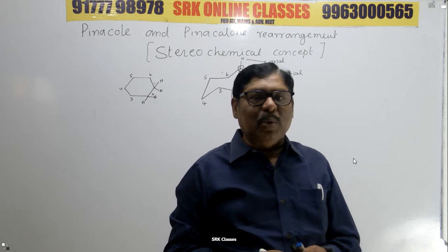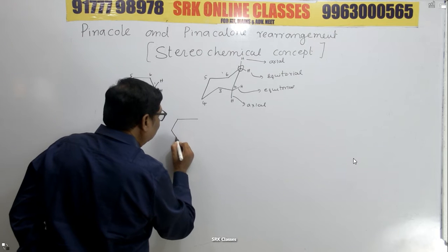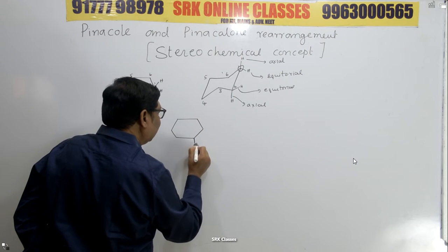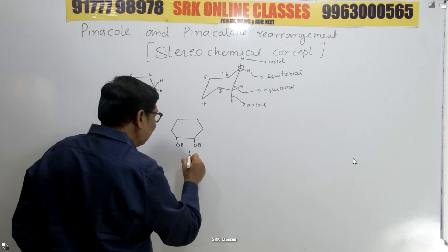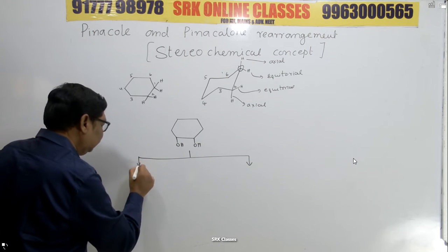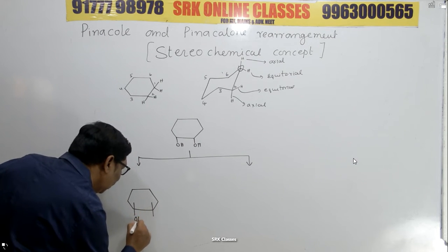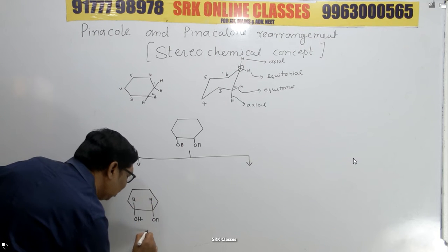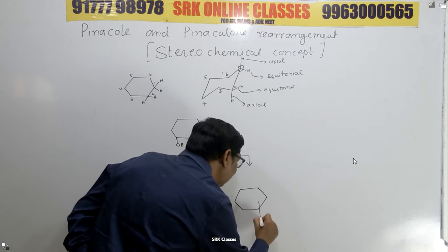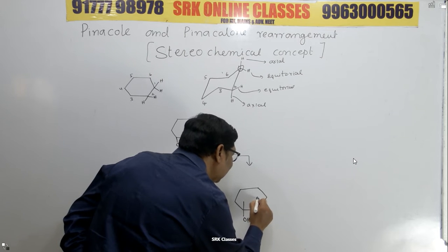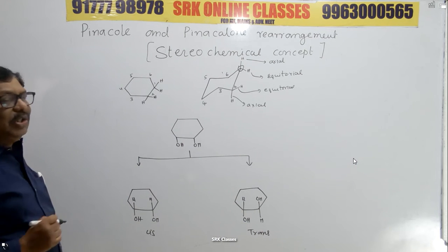I am taking a disubstituted cyclohexane — specifically 1,2-diol substitution. One,two-diol can exist as two geometrical isomers. In one geometrical isomer, two OH groups are on the same side — this is said to be cis. In the second one, two OH groups are in opposite directions — this is said to be trans. These two are called geometrical isomers.